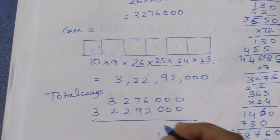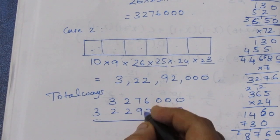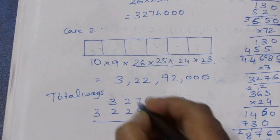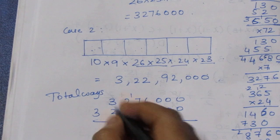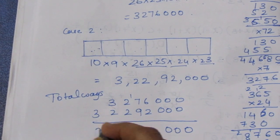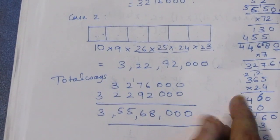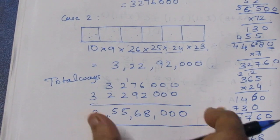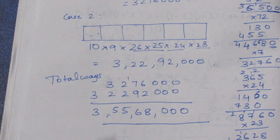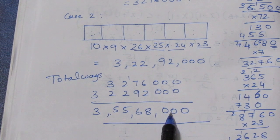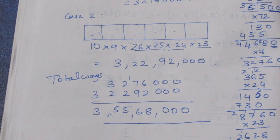So the total base is 3,556,800. This is the total number, the final total number of ways. So if you look at it, this is 3,556,800. Thank you.